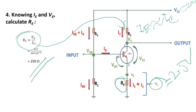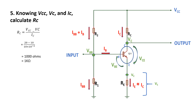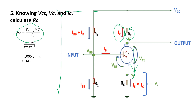Step number five: we want to calculate RC, the value of the collector resistor, which controls how much current flows through this transistor. From this equation we can easily calculate RC. The total voltage is VCC, and from VCC we deduct certain values and divide by how much current is flowing. From that we can find RC, which equals 1 kilohm.